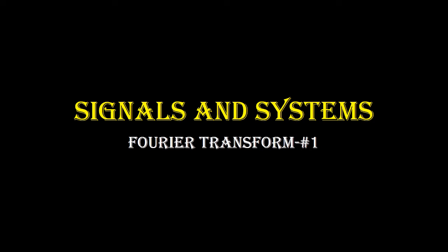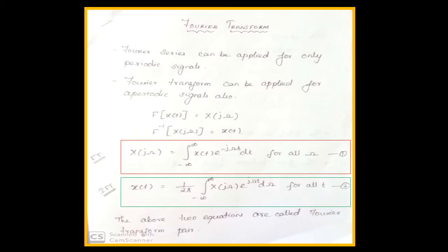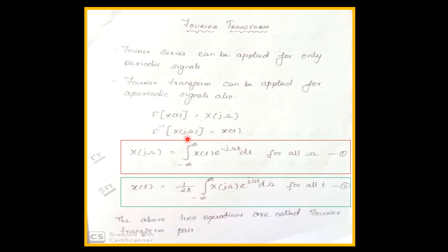In this video we are going to see the basics of Fourier transform. Fourier series can be applied only for periodic signals, so if we go for aperiodic signals then we can use Fourier transform. Fourier transform of x(t) is represented as capital X(jω). Fourier transform converts the time domain signal into frequency domain signal — the time domain representation is converted to the frequency domain representation.